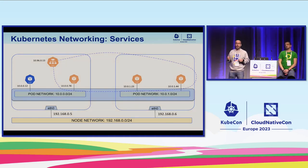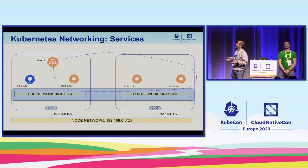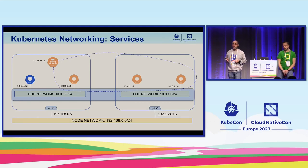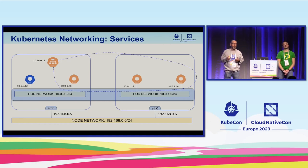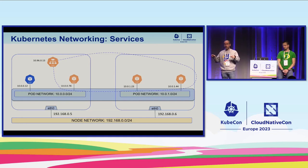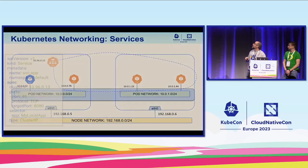Pods are ephemeral — you cannot rely on the IP of one pod. So like everything in software, we create another abstraction layer: the service. We need discovery, something consistent. For network people, you can model the service as a layer-4 load balancer. It has different types, but focusing on services with IPs: the service provides an abstraction, gives you DNS discovery, and forwards traffic to a set of pods.